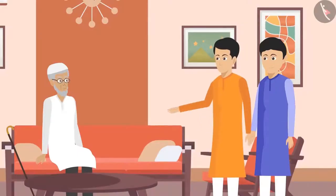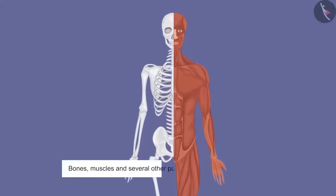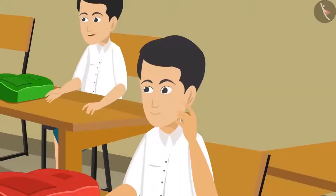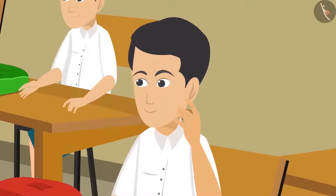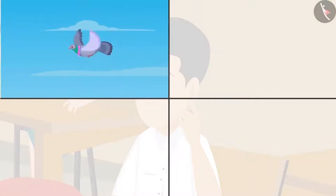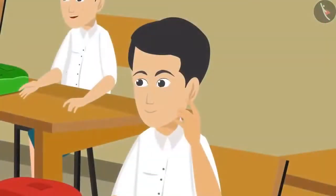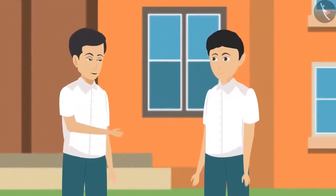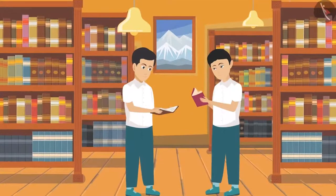Zeeshan and Sikandar were successful in Raheem Chacha's exam, in which he asked questions related to bones, muscles, and several other parts of our body and their movements. During school, an idea crossed Zeeshan's mind — other than humans, various other living beings also move, and different living beings move in different ways, distinct from humans, perhaps because the structures of their body parts are different. Zeeshan shares this with Sikandar, and Sikandar suggests they visit the zoo on Sunday. They studied about it in the school's library first.